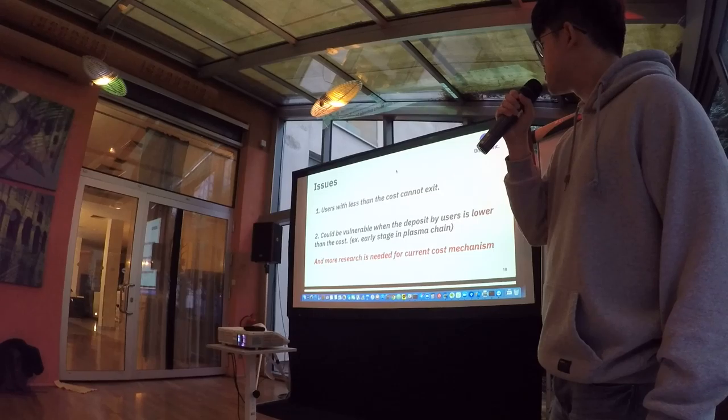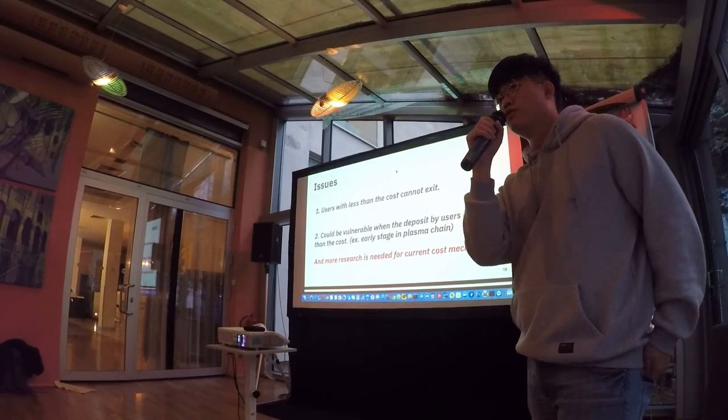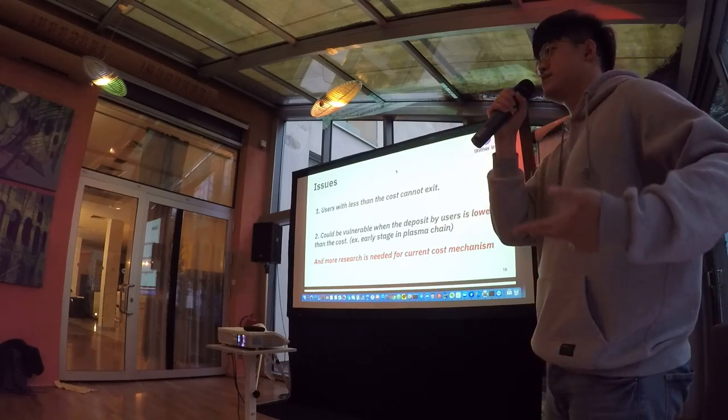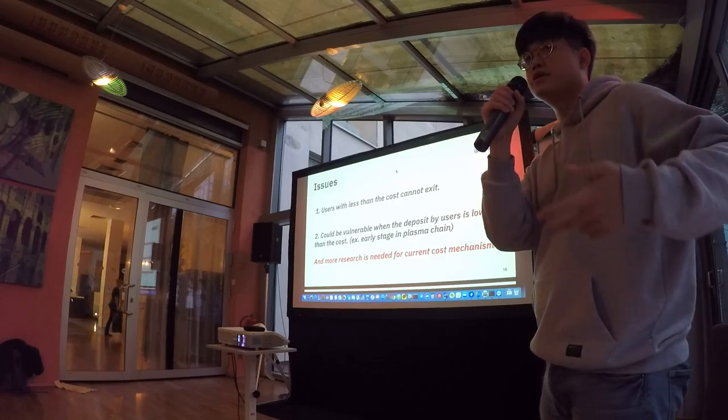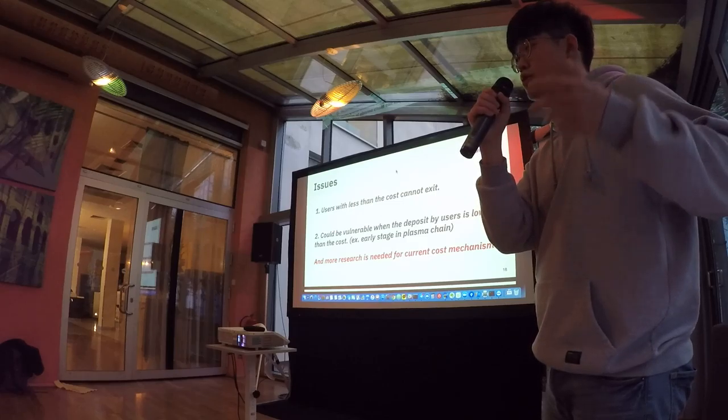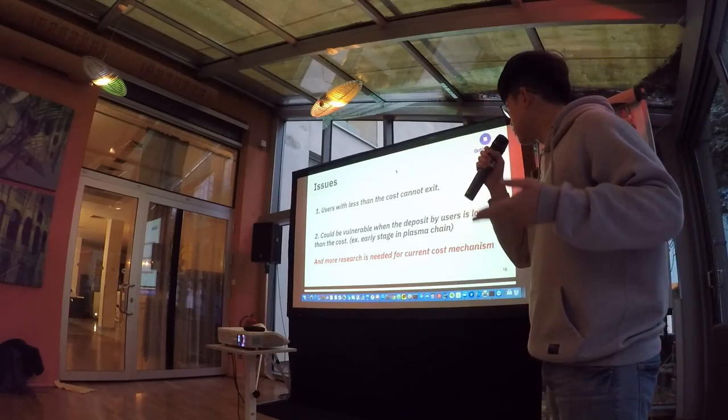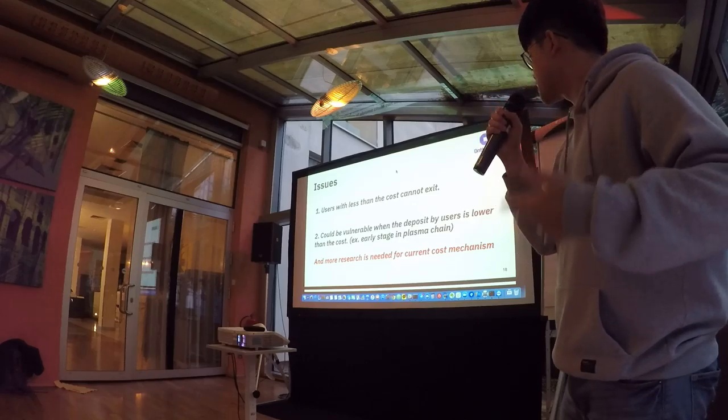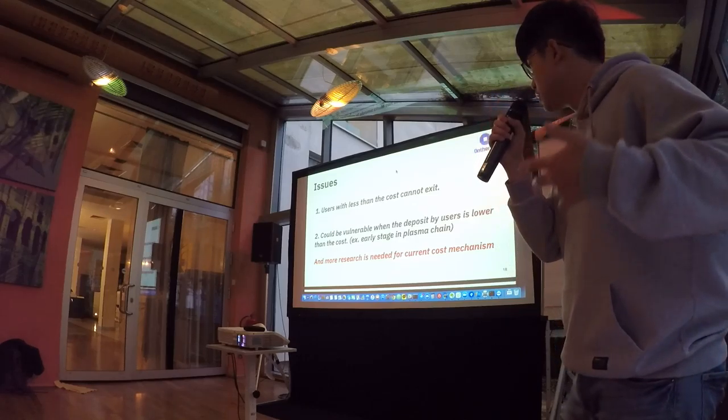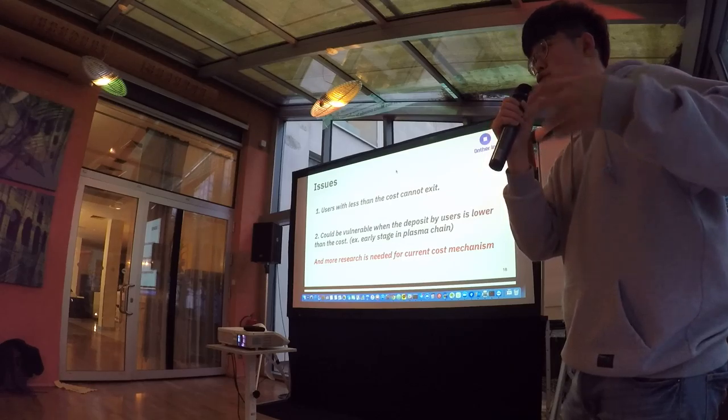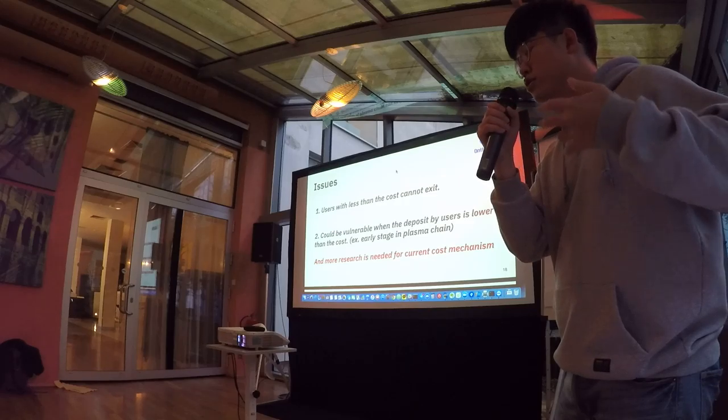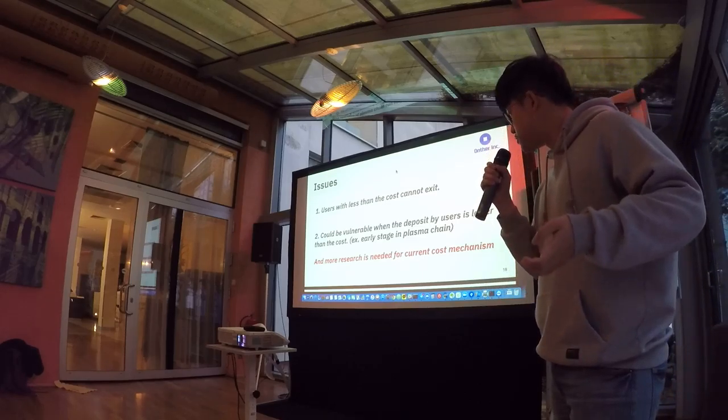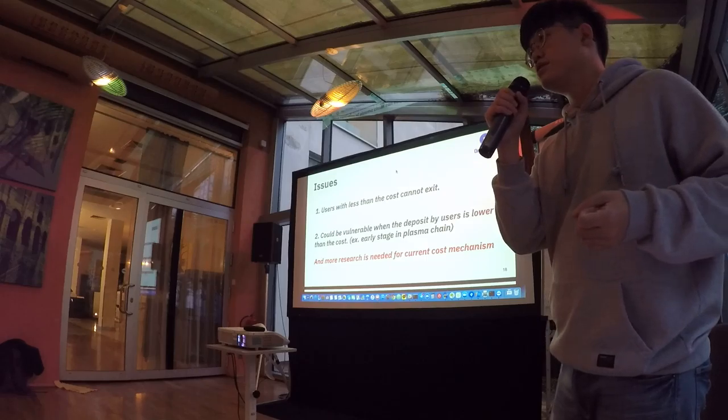There are some issues in here because the cost is always bad for users. The first one is users with less than the cost cannot access if the operator which holds data is very serious problem in our model. And second one is it could be vulnerable when the deposit by users is more than the cost. For example, in the early stage in plasm chain, the whole deposit amount could be lower than the total cost needed to submit user activity fork. The operator could use this situation. There is more research is needed for optimizing this cost mechanism.